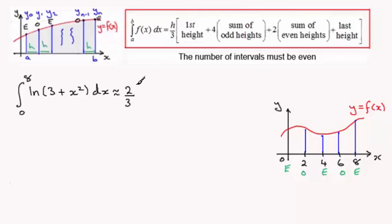And then we multiply this by the first height. First height will be when we substitute x equals 0 into our function here. And the first height then will be the natural log of 3.